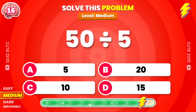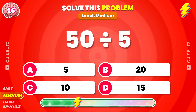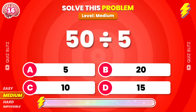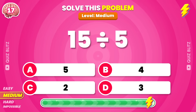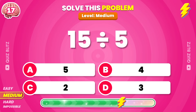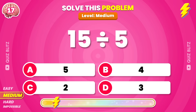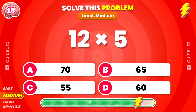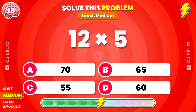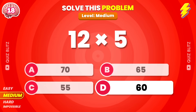How much is 50 divided by 5? The answer is 10. What's the result of 15 divided by 5? 12 times 5? The answer is 60.